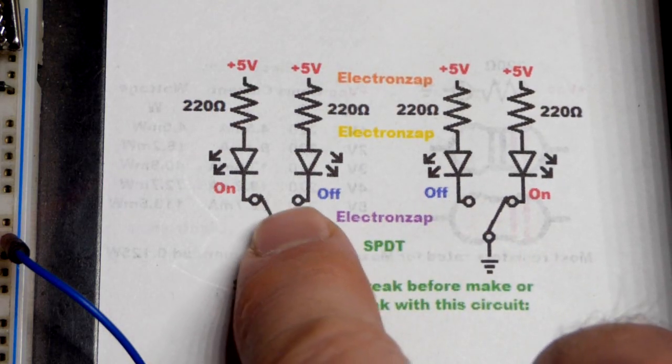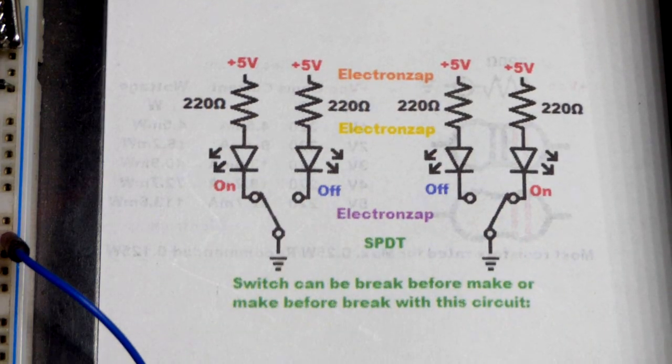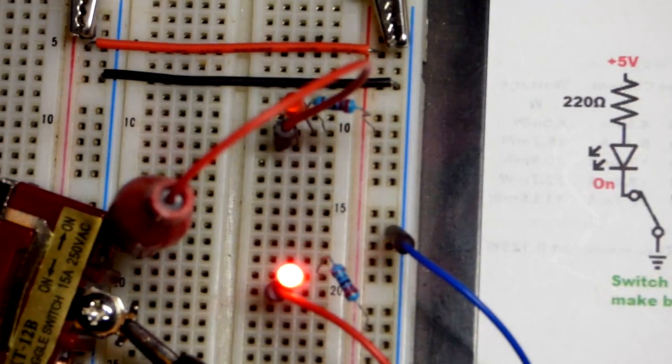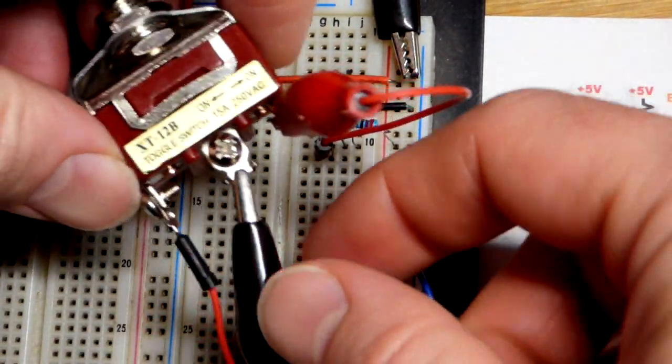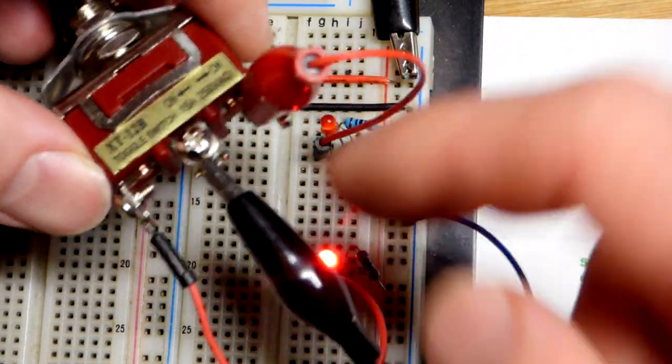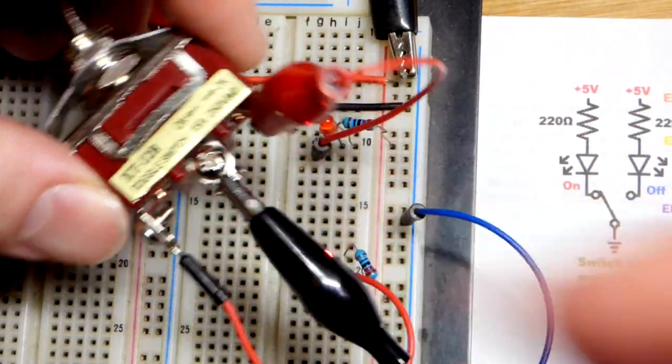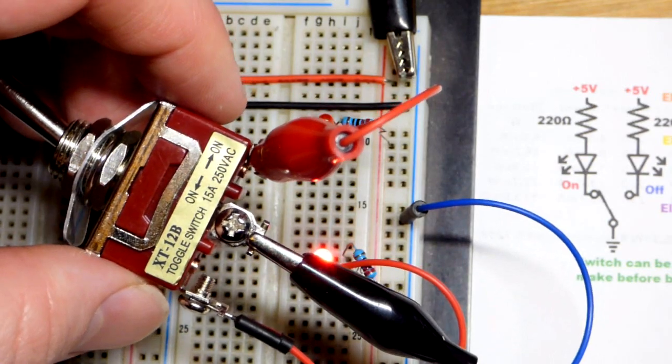Whichever side you're looking at right there that is closed. So in this case I have one from a kit I got a long time ago. So the middle terminal there is the common terminal, usually you call them.